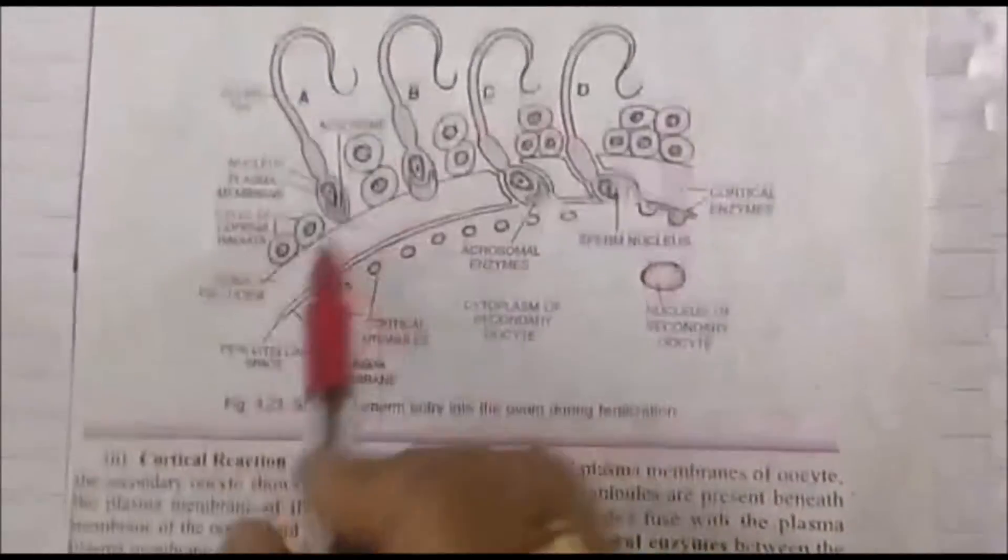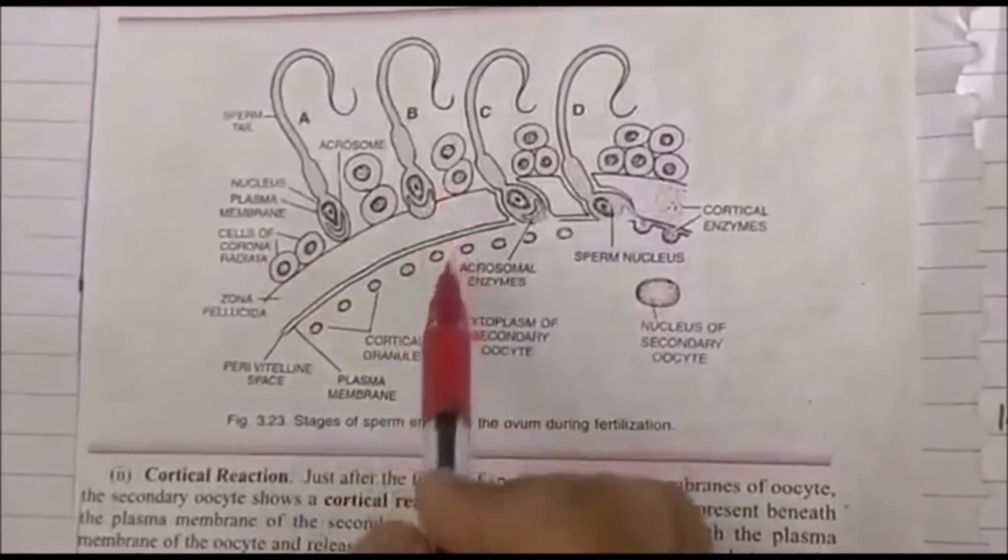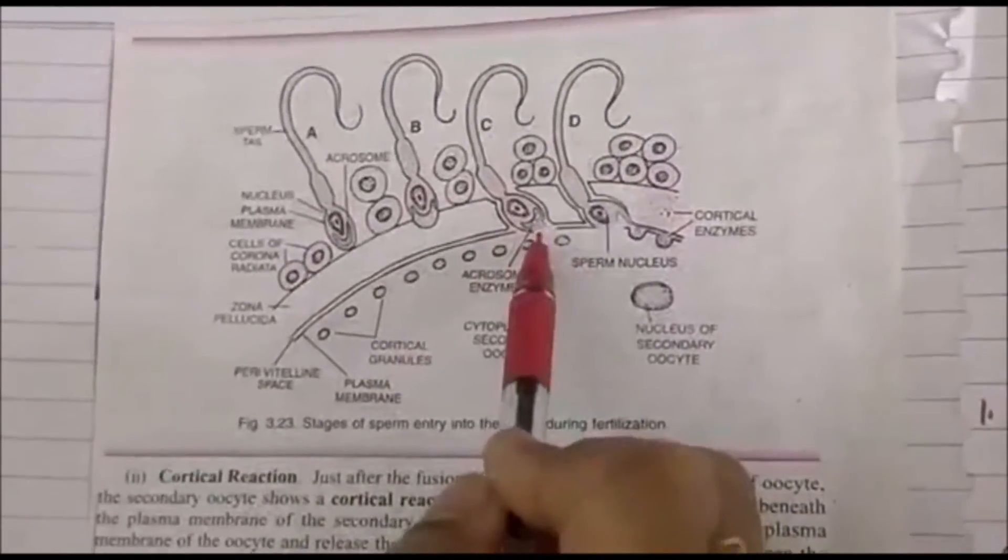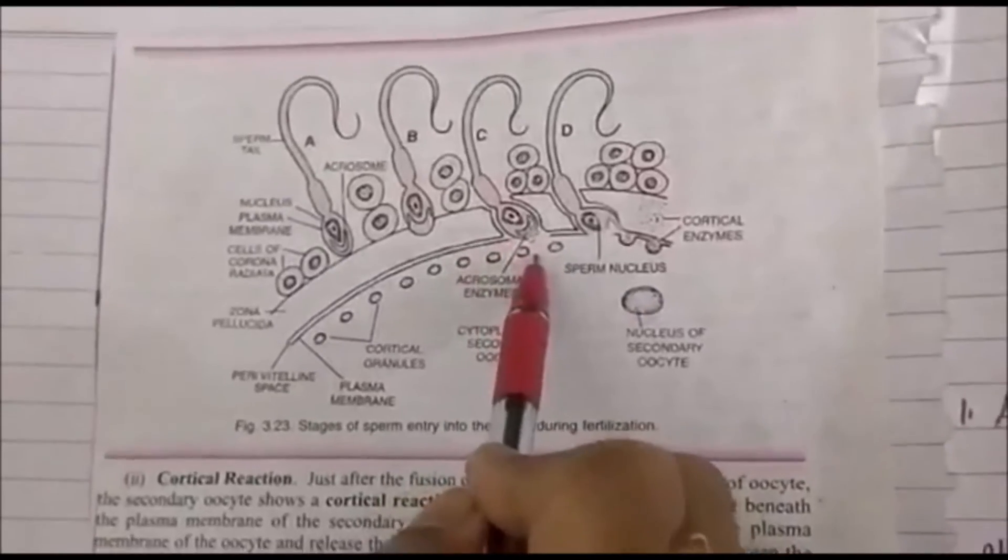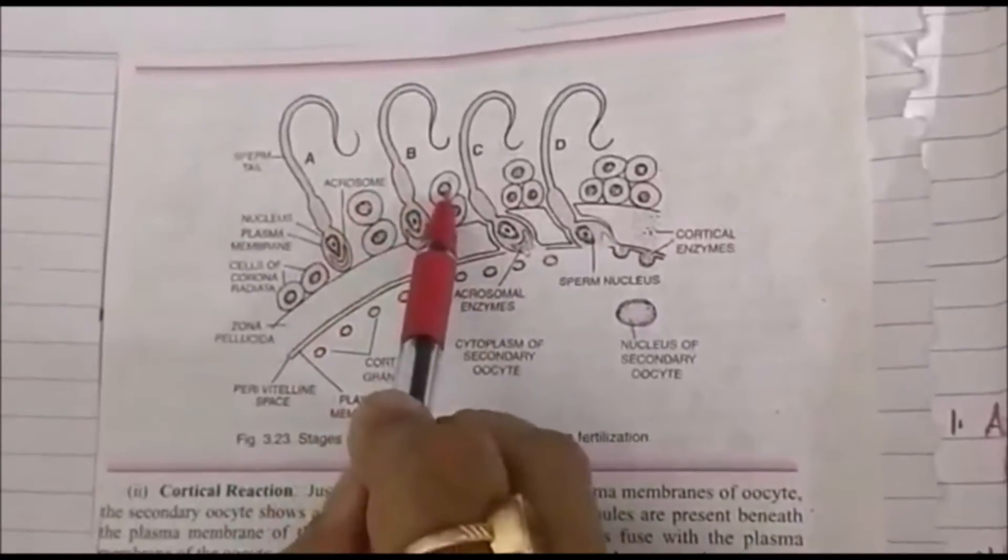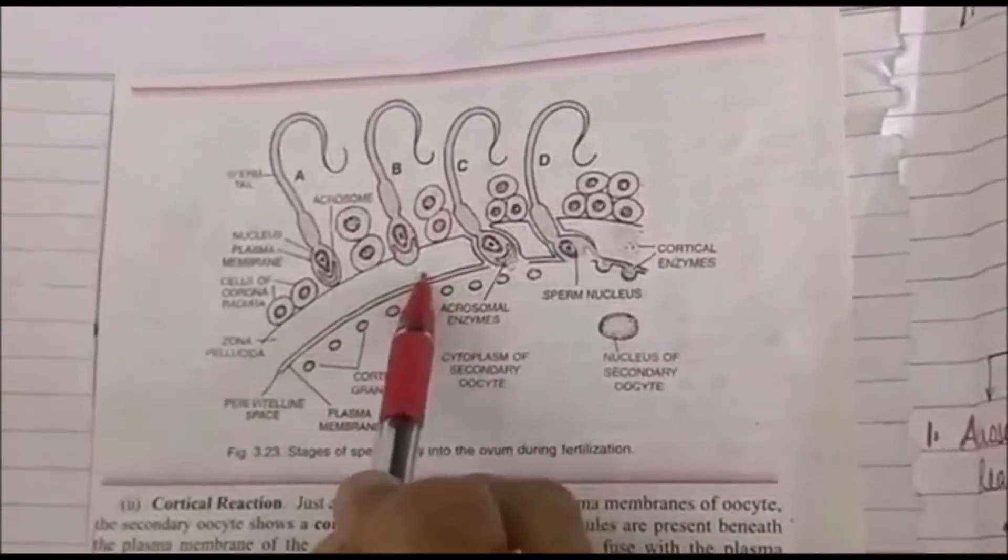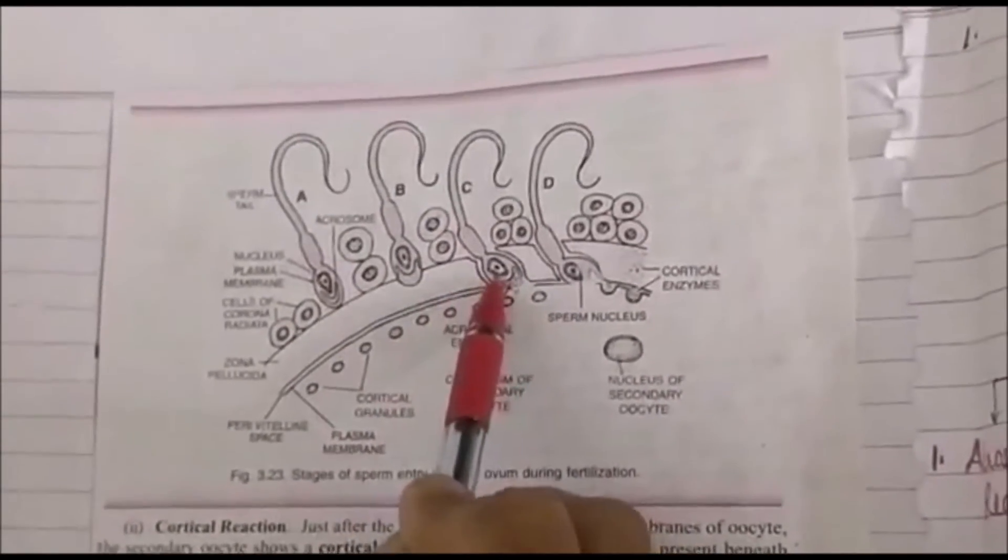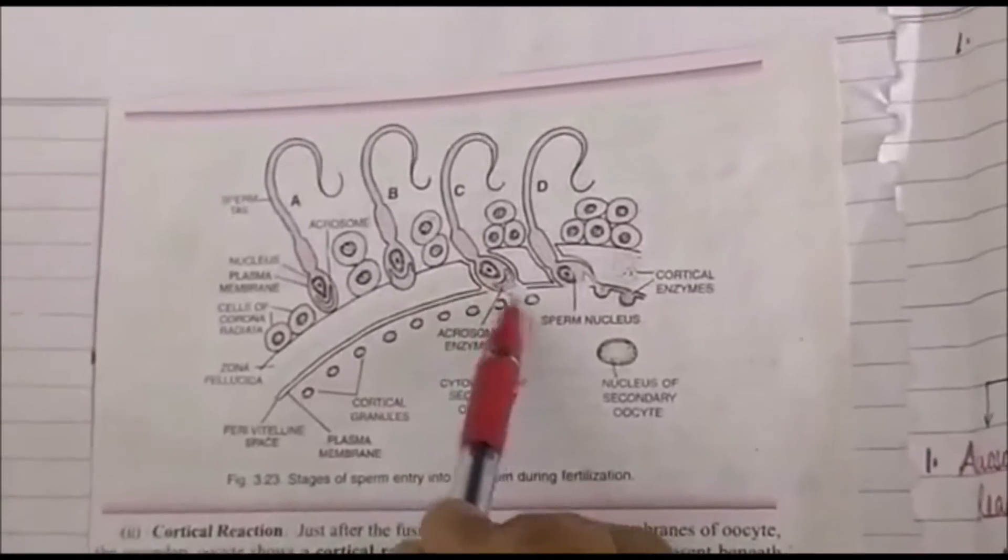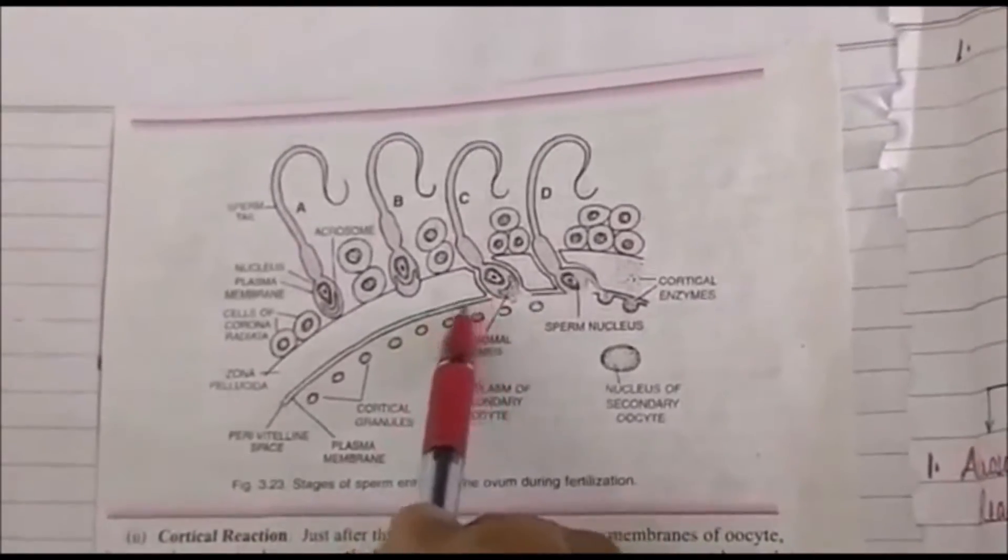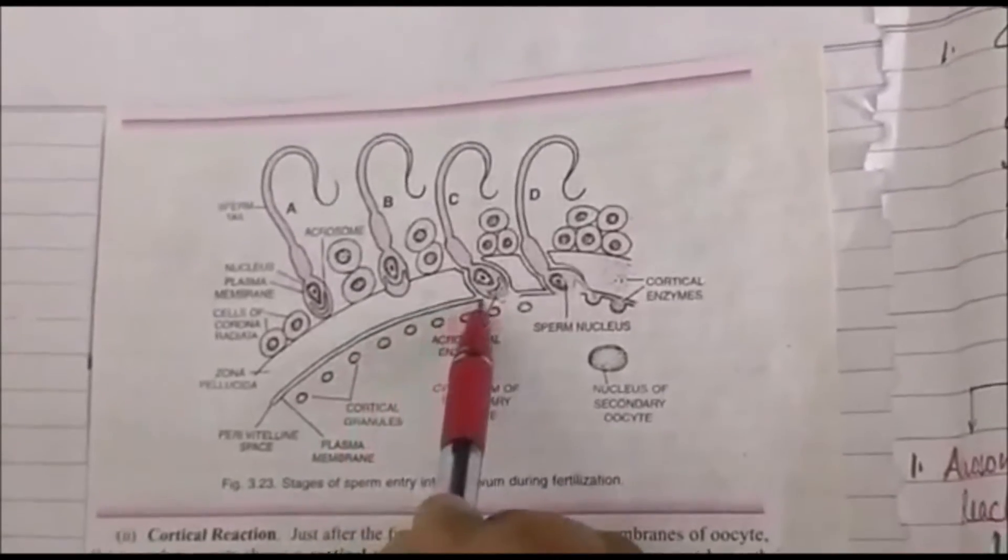When the sperm comes in contact with the secondary oocyte, the acrosome releases the hydrolytic enzymes. Those hydrolytic enzymes digest two things: one, corona radiata, and second, it digests the zona pellucida. After digesting the zona pellucida, this sperm comes inside and the plasma membrane of the sperm fuses with the plasma membrane of the secondary oocyte.